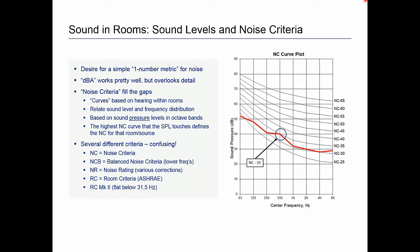So we use noise criteria curves, often called NC ratings. These curves are based on how people hear sound in rooms and relate sound level to frequency distribution. We take the sound pressure level in octave bands and map it on a chart against these curves; wherever the spectrum touches the highest-numbered curve, that's the NC level. Unfortunately there are several different noise criteria systems: noise criteria (NC), balanced noise criteria, noise rating, room criteria, and room criteria mark two. The most common two are NC curves and the room criteria, which ASHRAE has recommended.